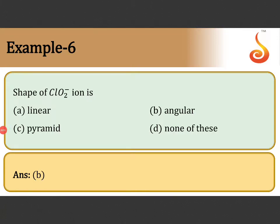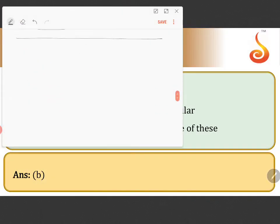Shape of ClO2- ion is called chlorite ion. Whether it is linear or angular or pyramid or none of these? So we have to investigate the chlorite ion structure, the chlorite ion shape. We need to find out, let us do it systematically.